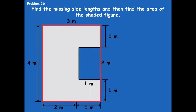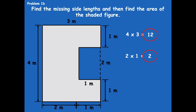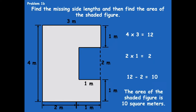Now I need to find the area of this whole giant rectangle, where the side lengths are four and three. So four times three equals 12. Now I need to find the area of this smaller rectangle because I have to cut out that piece — so that would be two and one, so two times one equals two. Now I'm going to subtract the smaller unshaded rectangle from the shaded, which would be 12 minus two equals 10. So the area of the shaded figure is 10 square meters.